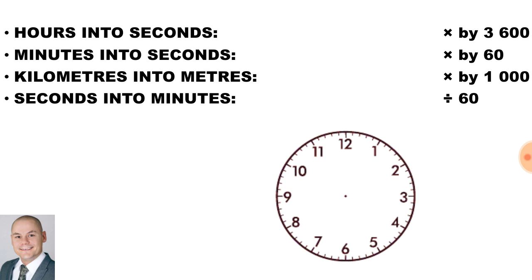To convert seconds into minutes, we divide by 60. And to convert meters into kilometers, we divide by 1000.